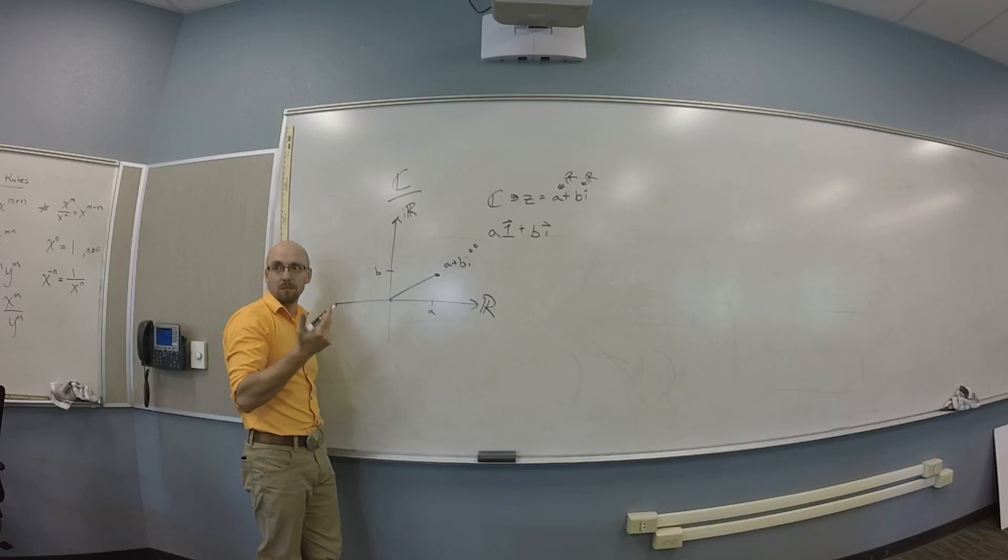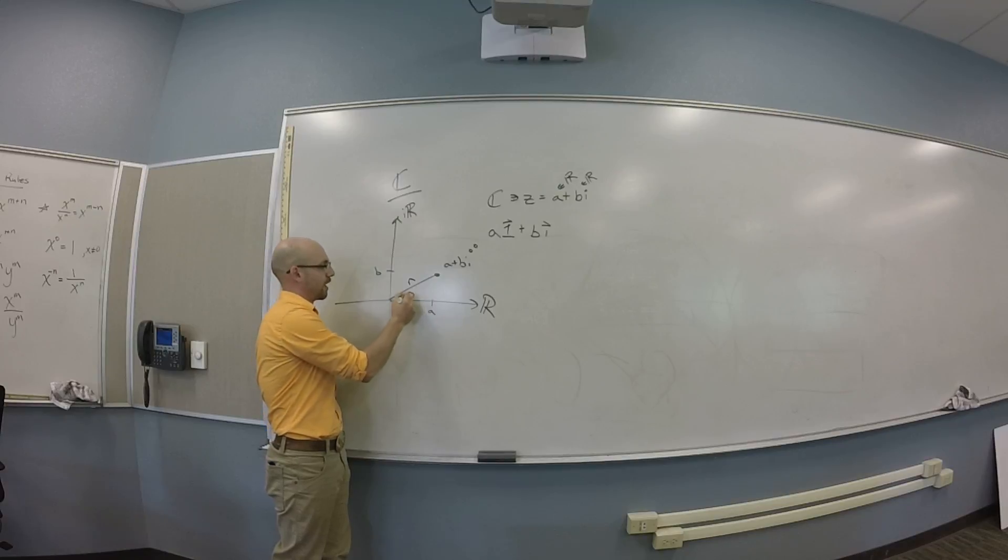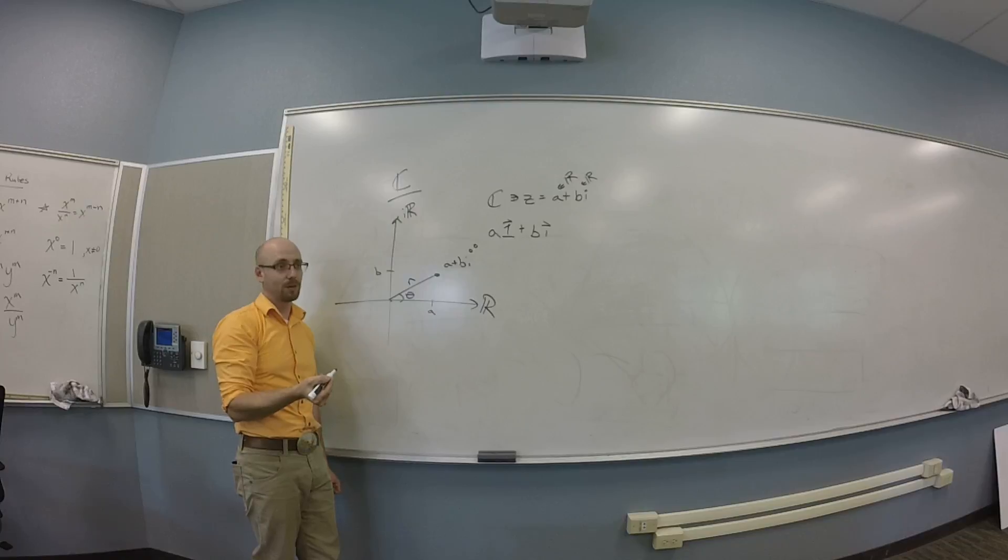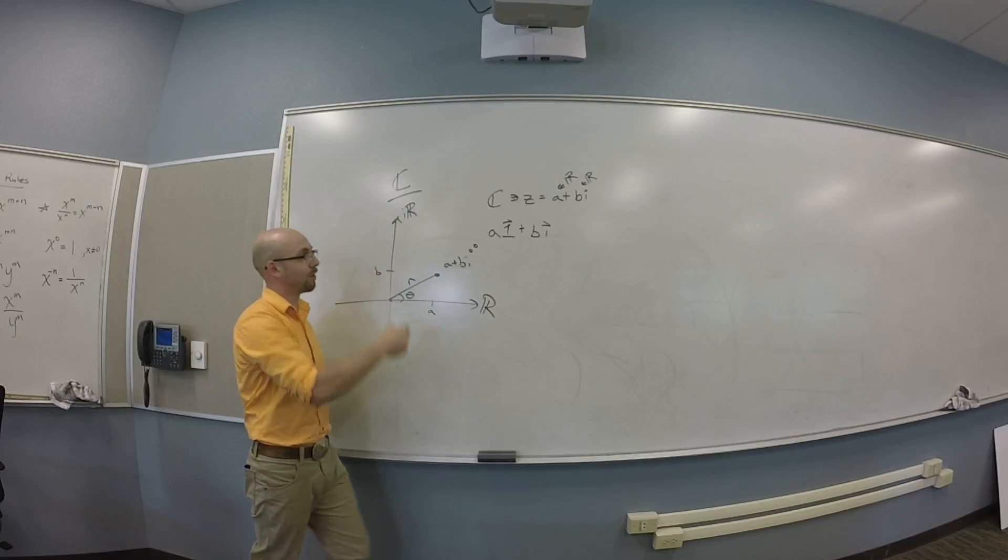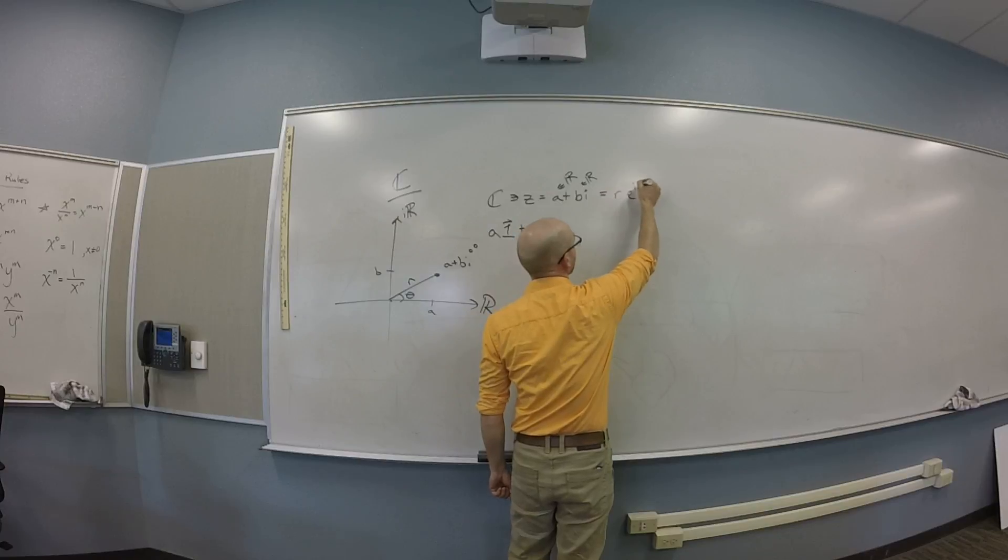I'm going to leave this on my picture just because the next thing I want to do is talk about polar. So in polar, right, there should be some radius, yeah? And some angle theta. Now the really bad-ass thing about complex numbers is you can write A plus BI as R times E to the I theta.